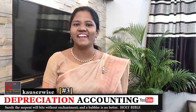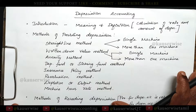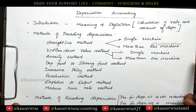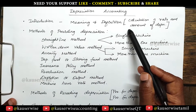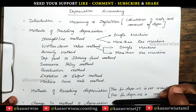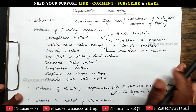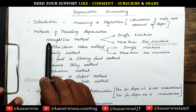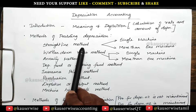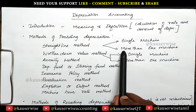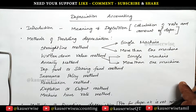Hi, welcome to my channel. This is Kouser Weiss and this is the continuation video of depreciation accounting. You can find the playlist link in the description box to get the full collections. In this video we are going to see the second one, that is the straight line method when there is more than one machine.